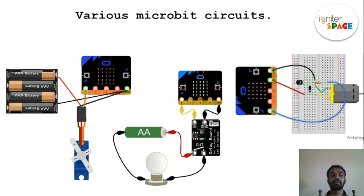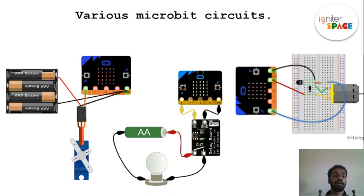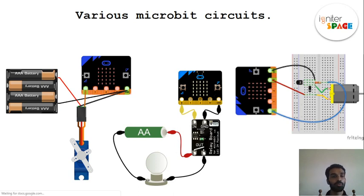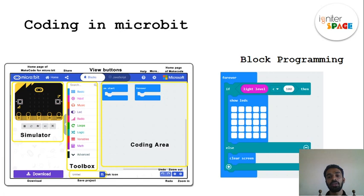Using the edge connectors, we can attach many things to the Micro:bit — sensors, motors, and many other circuit materials. Now, let's talk about coding with Micro:bit, which I will explain as the lesson continues.